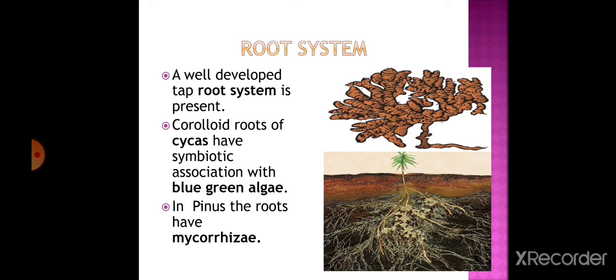Regarding the root system, a well-developed tap root system is present. Coralloid roots of Cycas have a symbiotic association with blue-green algae, that is cyanobacteria - a mutually beneficial relationship. In Pinus, the roots have mycorrhizae - a symbiotic association between the mycelium of a fungus and the root of a plant.